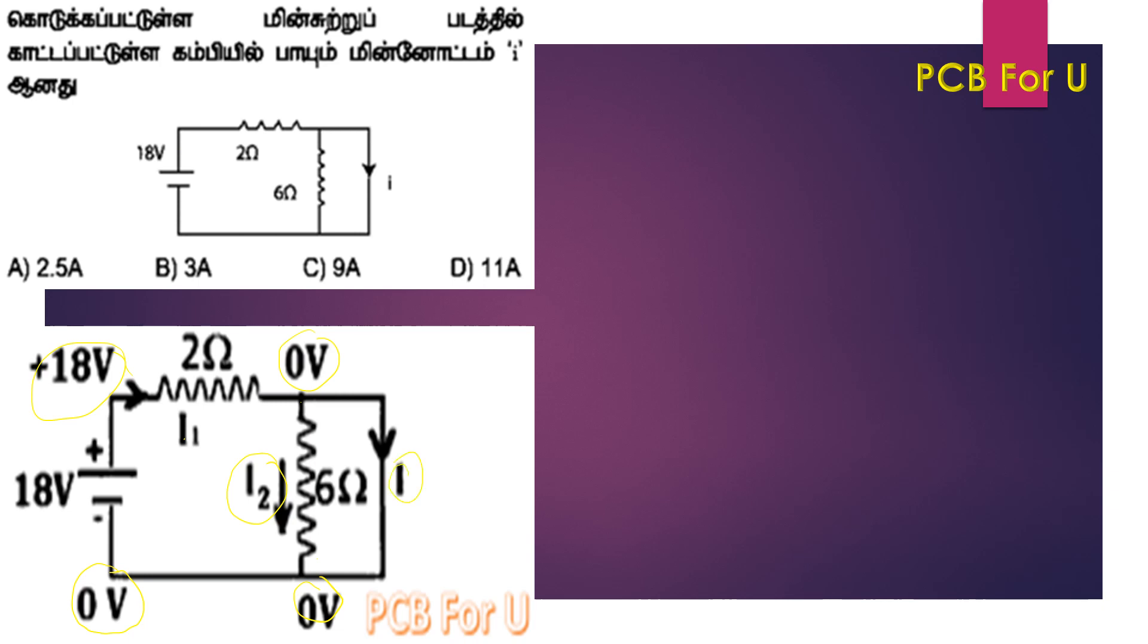This is plus 18 volts. We have a voltage here, and we have current I1. This is positive current I1. Then we have a voltage drop across the resistor.